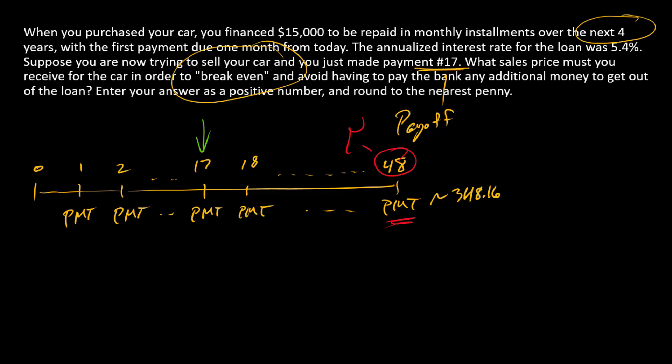And so what we're looking for is some number, and we'll call that number X, which you would swap for the remaining annuity. And now, since this remaining annuity has 31 payments left, we're going to end up calculating the present value of a 31 payment annuity.